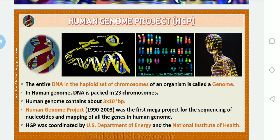The Human Genome Project was coordinated by the U.S. Department of Energy and the National Institute of Health. With the coordination of these two, the HGP was able to identify the complete sequence of the genome, allowing us to know exactly the total number of genes and what the bases are.